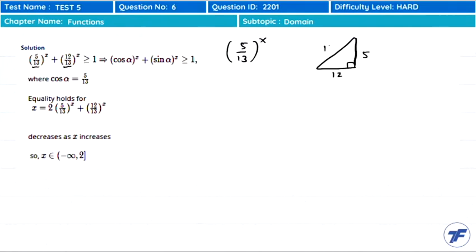Or if this angle is alpha, this is 5, this is 12, this is 13, and this angle is alpha.